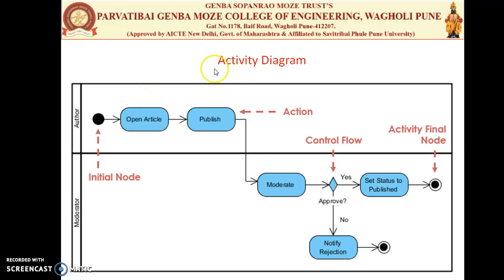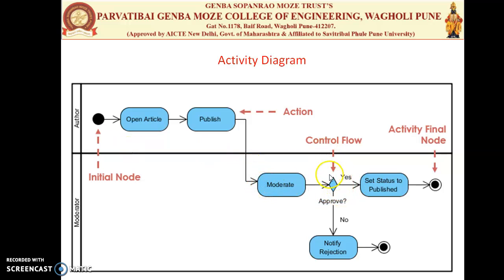Here is another example where an article is written by an author. We always start with a solid dot as the initial node. The first activity is to open the article, then publish it, then moderate it. After moderation, there is a decision diamond: if the article is approved, go to set status to publish; if not approved, notify the rejection and terminate.